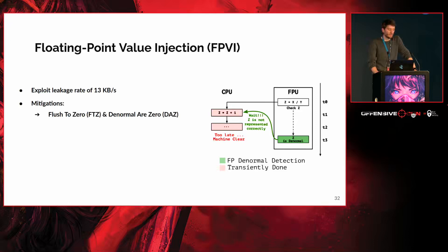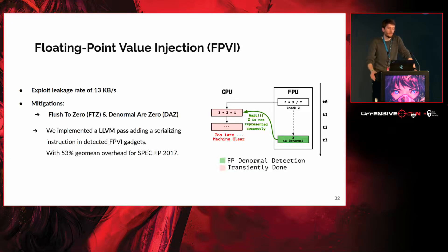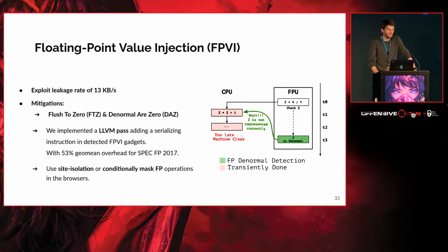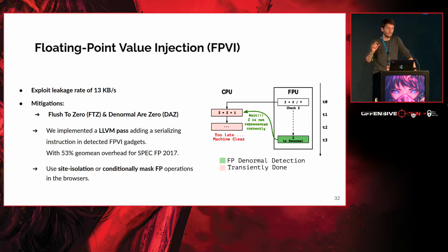Briefly about mitigations: you can simply disable subnormal number handling in the floating point unit. We also implemented a compiler pass to serialize possible FPVI gadgets with a 53% overhead. Or, as Firefox did, after every floating point operation they conditionally check that the floating point result is not of type NaN, so you can no longer speculatively type-confuse the JavaScript engine. Chrome was saved by default because it was already using site isolation.